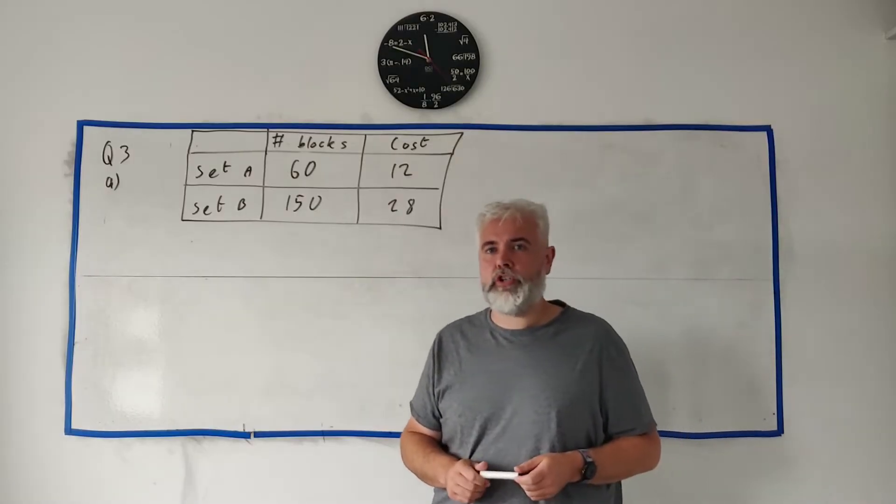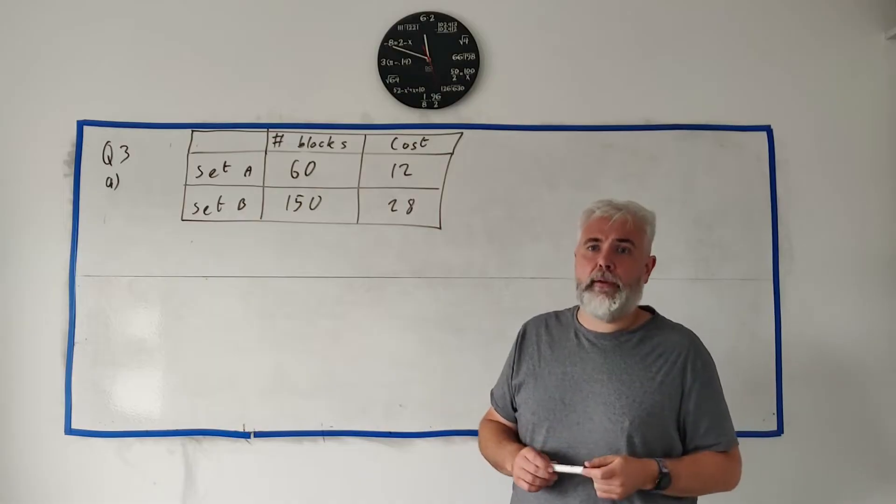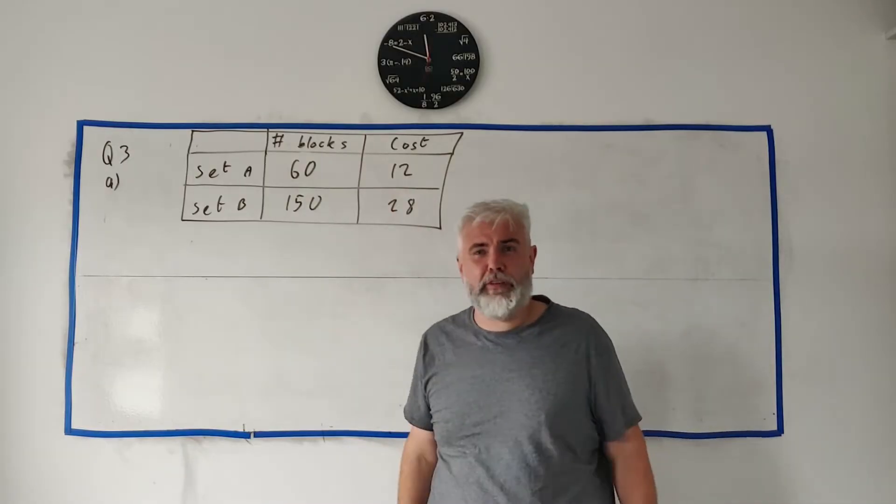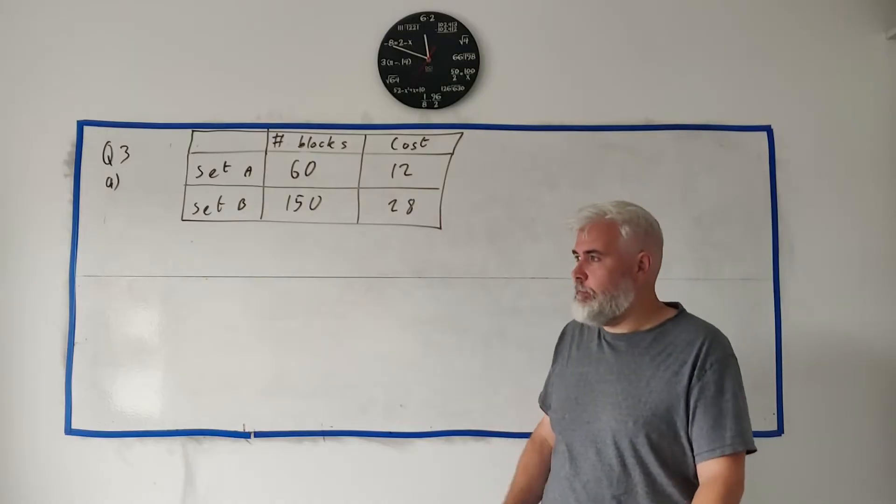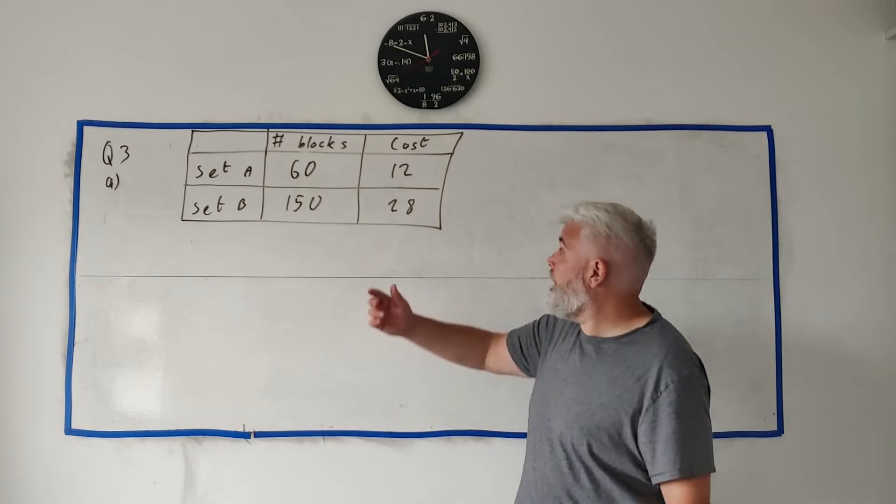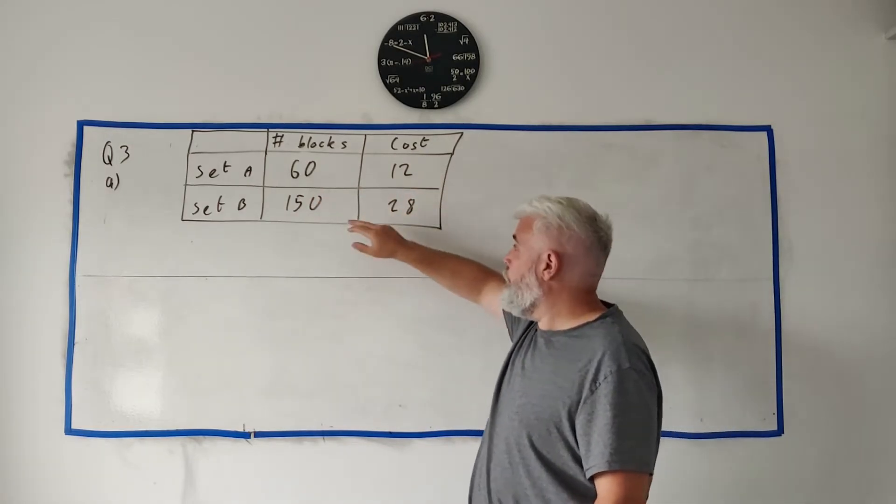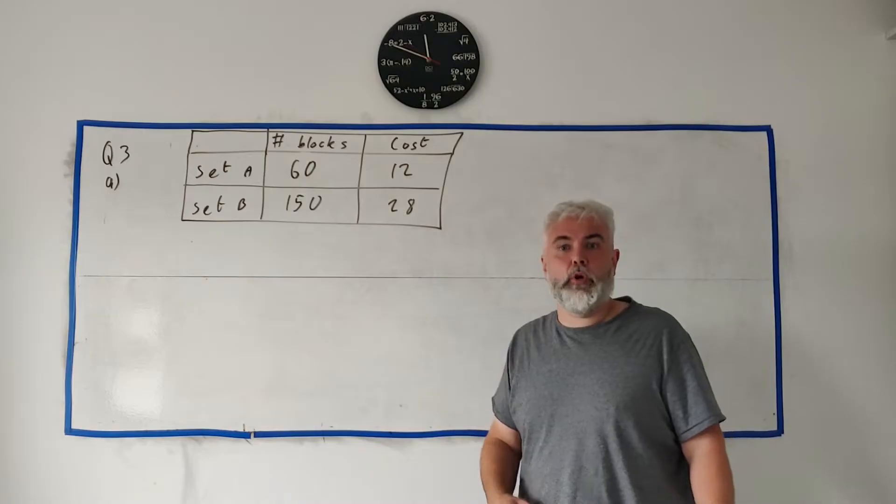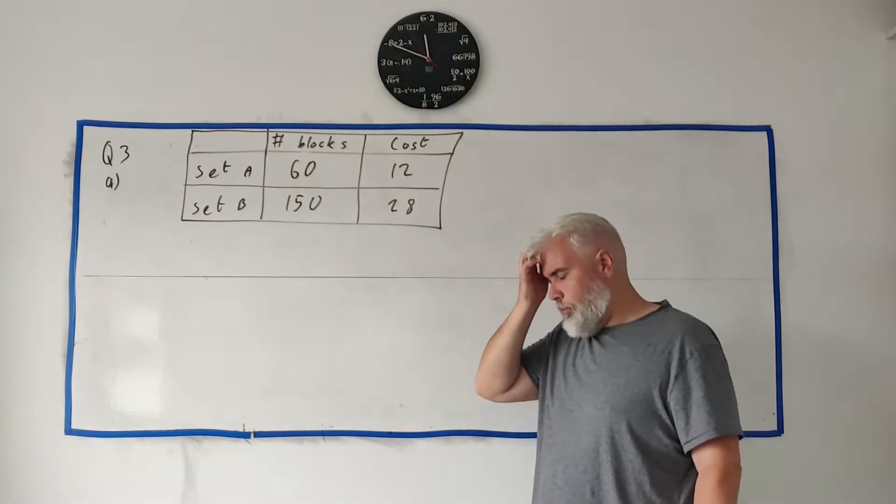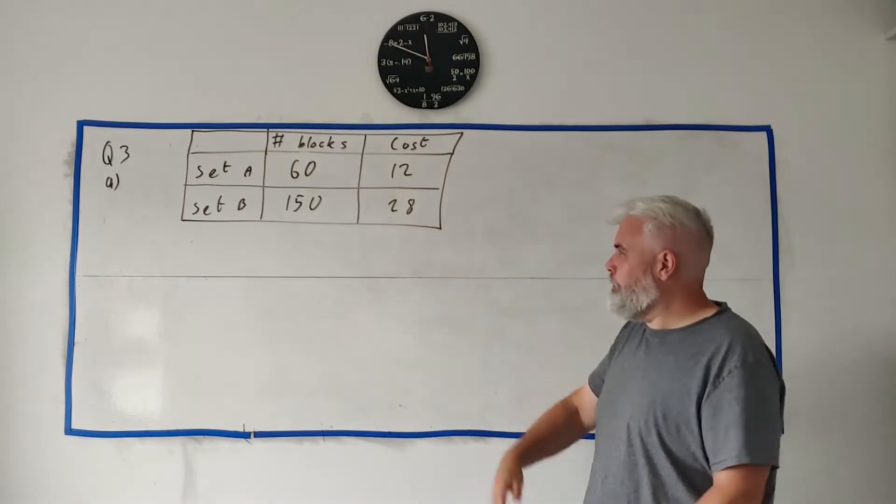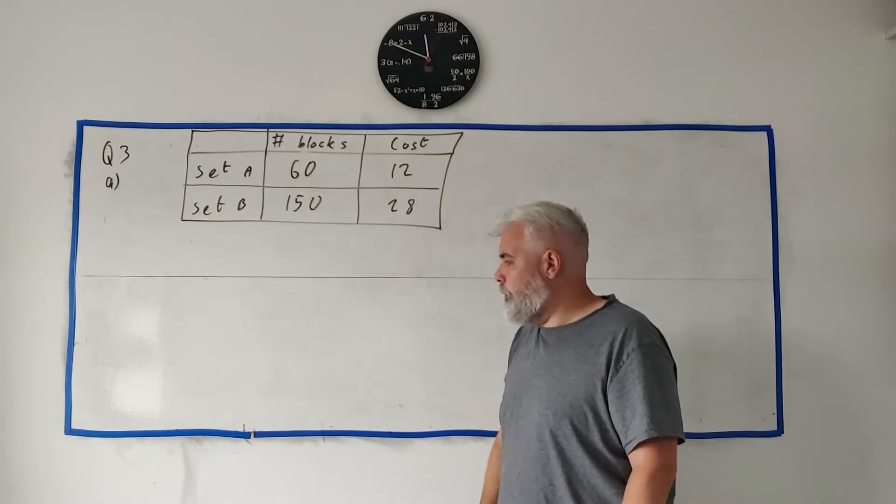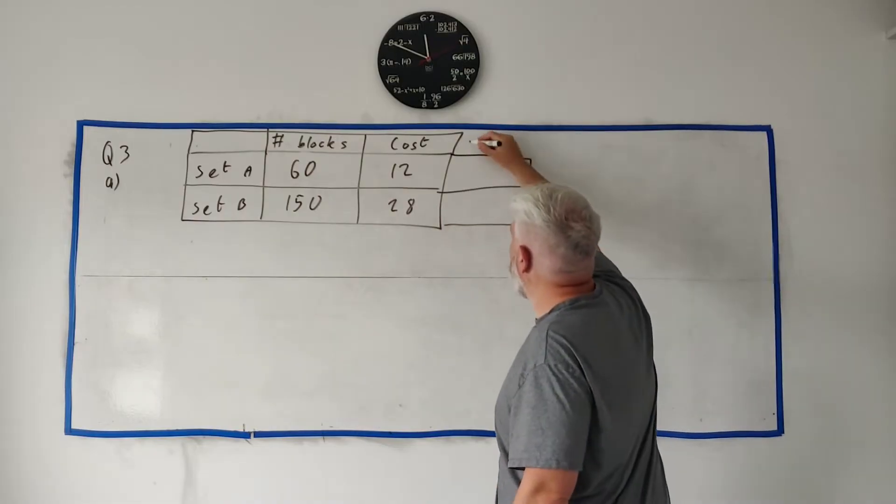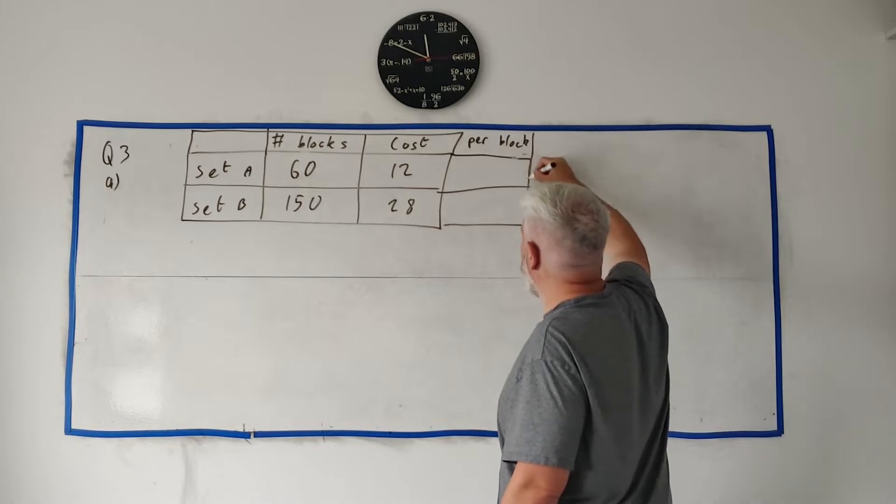In question 3 they tell us about a toy shop that sells two different sets of building blocks, set A and set B. There's different number of blocks in each set and they cost different amounts. You can buy 60 of them for 12 euro or you can buy 150 for 28 euro and they're simply asking which of the building blocks work out cheaper per block. So what we really want to do is find out an extra column here, a price per block.